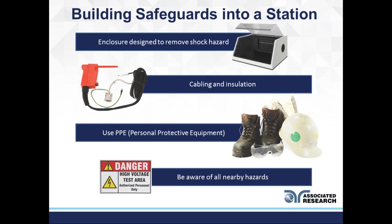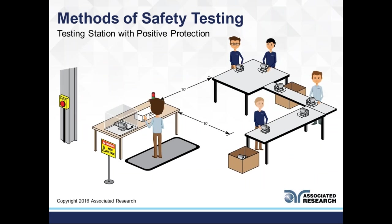For unqualified employees who are just passing by, you need to let them know they're entering a hazardous area. They should be trained to recognize that if they see the sign, they know what it means — even if they don't know how to use the equipment. Here's an example of safety testing with positive protection: positive protection means I have a DUT enclosure, so I'm positive that my operator will be nowhere near high voltage or high current when the test button is hit.